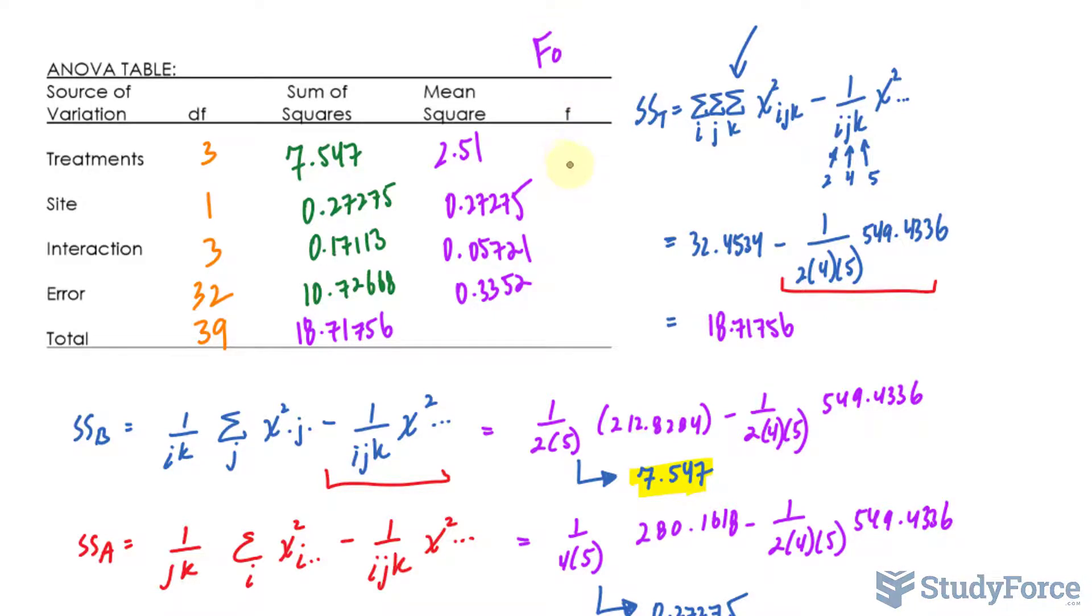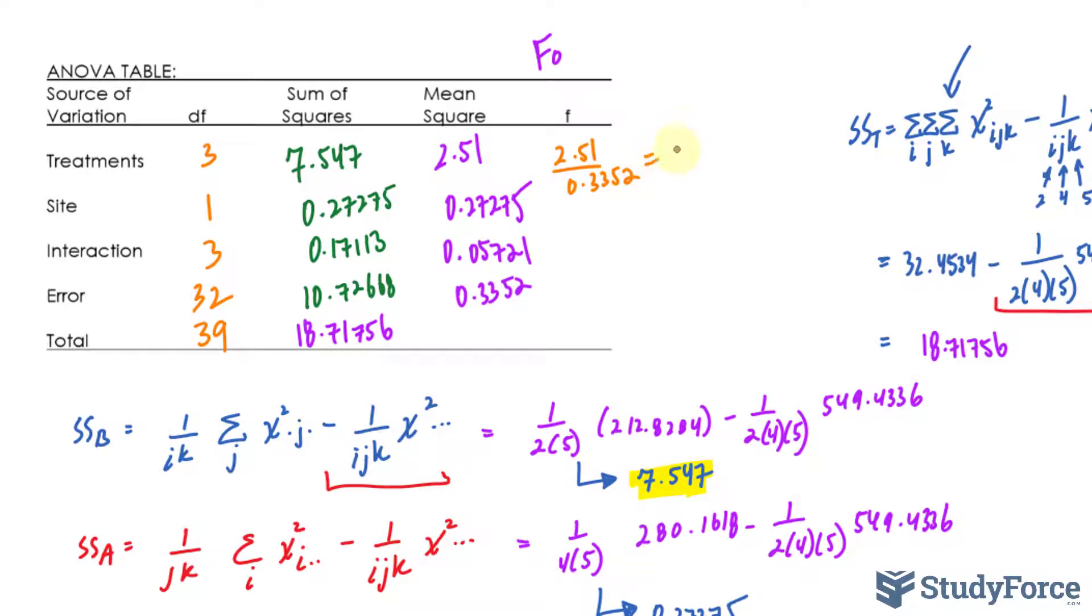Now, the moment of truth, we are looking for the value of F observed. To calculate F observed for the treatment, we will take 2.51, this value, and divide it by the error, 0.3352. This gives us 7.5049. Then, the same thing for site and interaction, so 0.27275 divided by 0.3352, and 0.05721 divided by 0.3352. The F observed for the site and interaction is what you see.